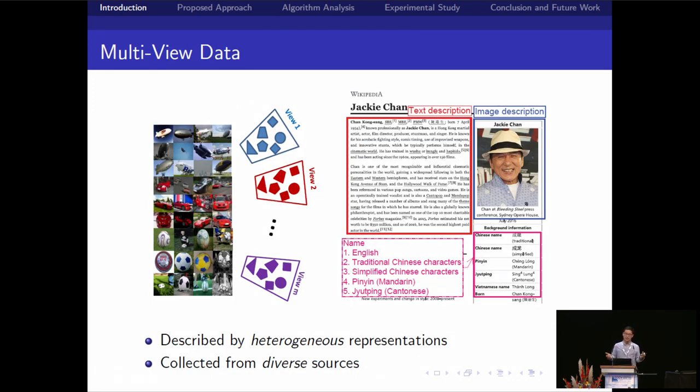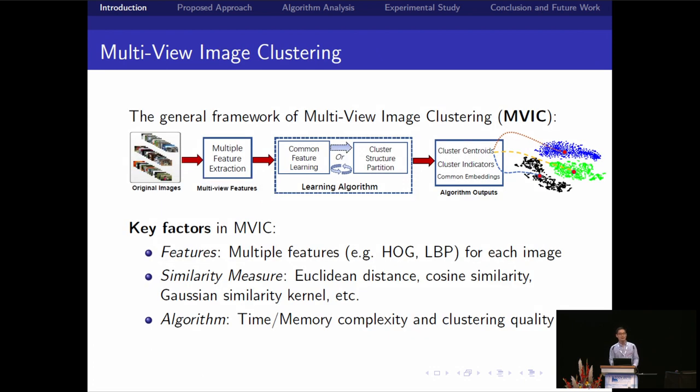The main aim of our work is how to economize to cluster multi-view data. Some of you may not know what multi-view data is. Actually, nowadays we can access multi-view data that can be described with different views and using different features. On the right part we give you an example from Wikipedia. You can describe subjects from text description or image description, or use different languages to describe the same thing. Multi-view data is very common in our daily life.